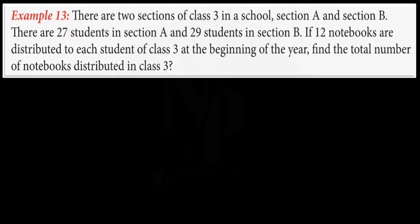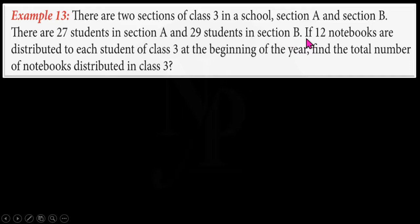Example number 13 in our textbook: there are two sections of class 3 in a school, section A and section B. There are 27 students in section A and 29 students in section B. If 12 notebooks are distributed to each student of class 3 at the beginning of the year, find the total number of notebooks distributed in class 3.